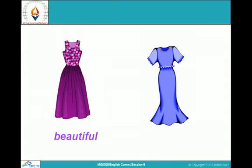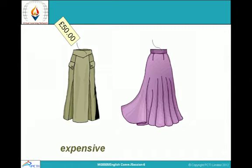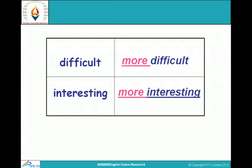Similarly, for the word beautiful — you cannot write 'beautifuller'. So we add 'more' in front of it. That is beautiful, but this is more beautiful. This is expensive, but that is more expensive. The comparative of difficult is more difficult and interesting becomes more interesting.